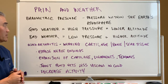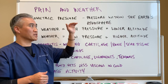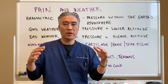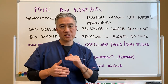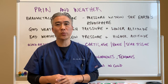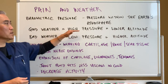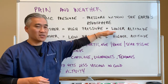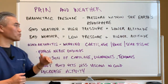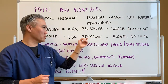In order to understand this, we have to understand what barometric pressure is. Barometric pressure is basically pressure within the Earth's atmosphere. Depending on where you are, either at sea level or higher elevation, the pressure will be different. Same thing with weather — when you have good weather, the pressure is higher. Obviously, at sea level the pressure is going to be higher than on a mountain. Bad weather has low pressure, and at higher altitudes you will also have low pressure.